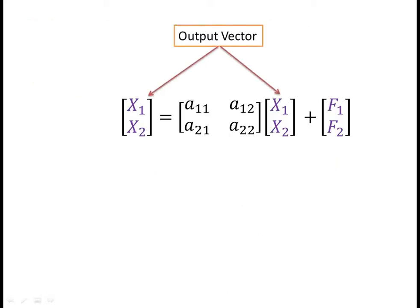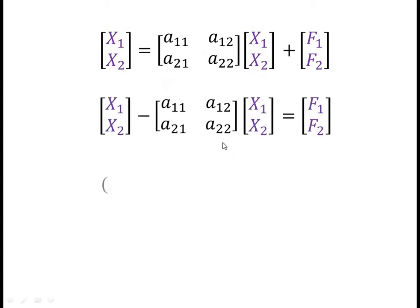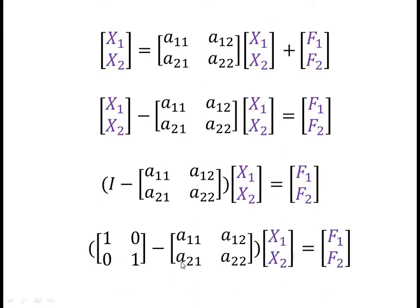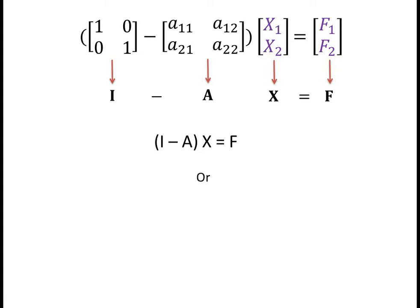We can bring the Ax term to the left-hand side, and after rearrangement we get: the identity matrix I minus the input coefficient matrix A, multiplied by the output vector x, equals the final demand vector f. Writing I minus A as (I-A), we get (I-A)x equals f, or equivalently x equals (I-A) inverse times f. This is the Leontief input-output model.